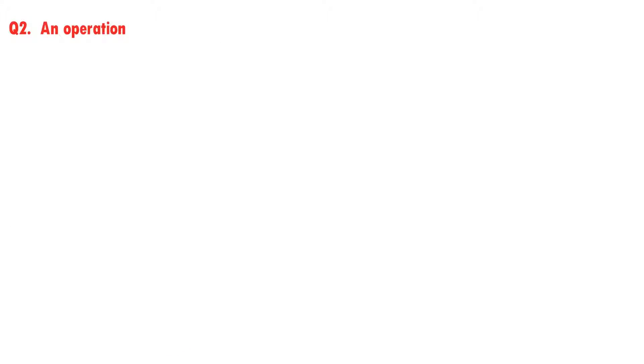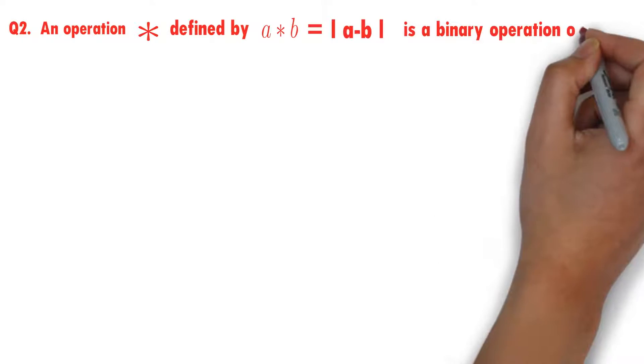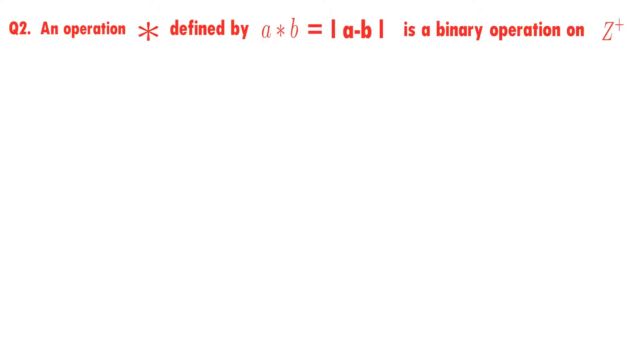An operation star defined by a star b equals modulus of a minus b is a binary operation on the set of all positive integers. We need to check this.